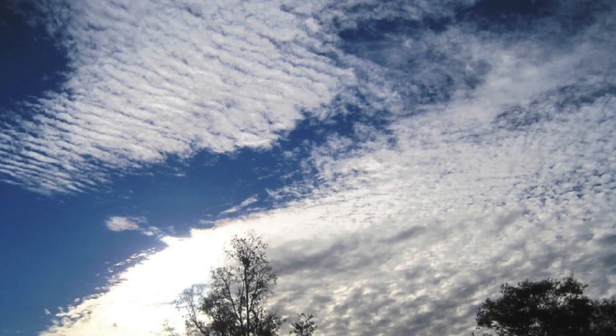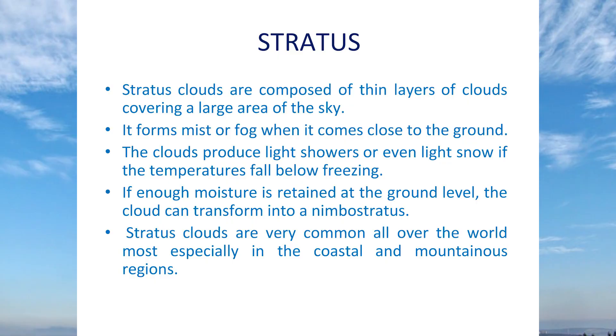Stratus clouds are composed of thin layers that cover large areas of the sky. They carry just mist or fog. Once they come very close to the ground, they give nothing but fog, and they always look like a fog-like appearance. They are very common in coastal and mountainous regions. Cumulus means heap — a large white heap of clouds that gives us light showers.